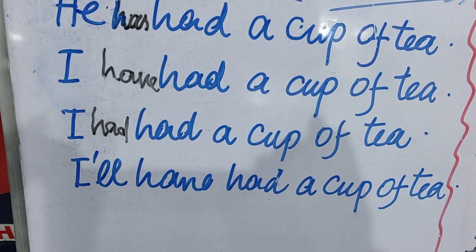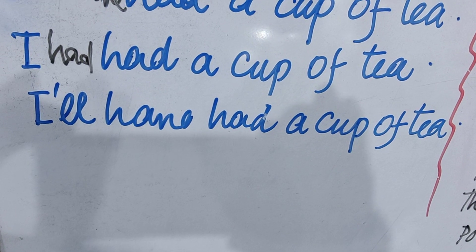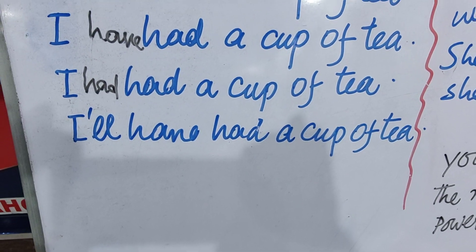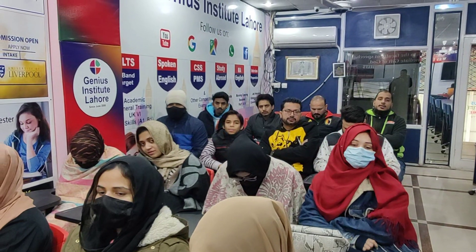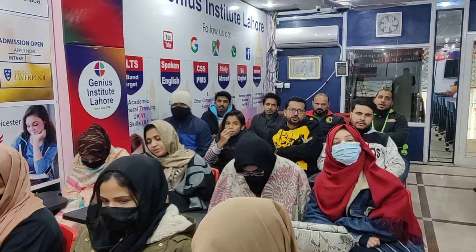Future perfect: 'I'll have had a cup of tea' — میں چائے کا ایک cup پی چکا ہوں گا۔ Negative: 'I won't have had a cup of tea' — میں چائے کا ایک cup نہیں پی چکا ہوں گا۔ Interrogative: 'Will I have had a cup of tea?' Negative interrogative: 'Won't I have had a cup of tea?' اور 'Why will I have had a cup of tea?'